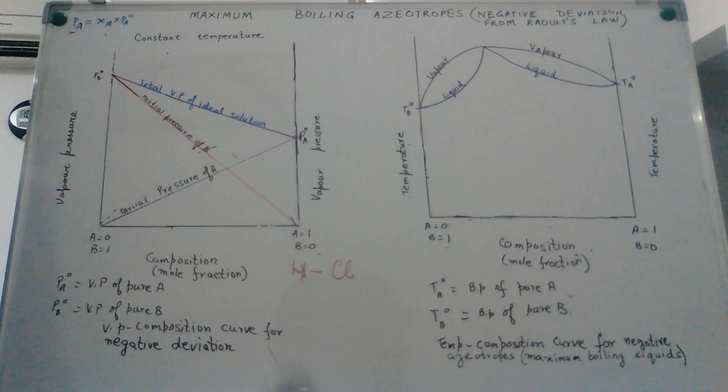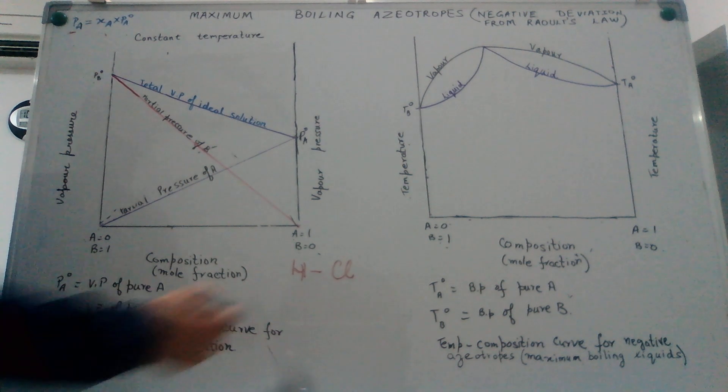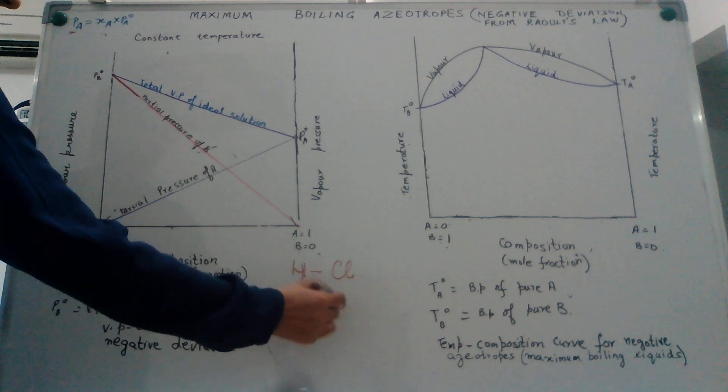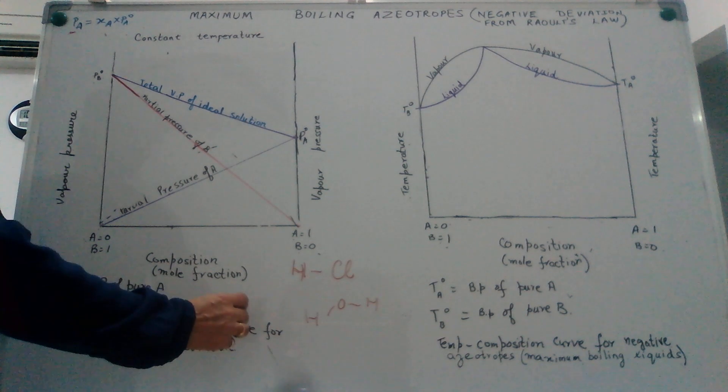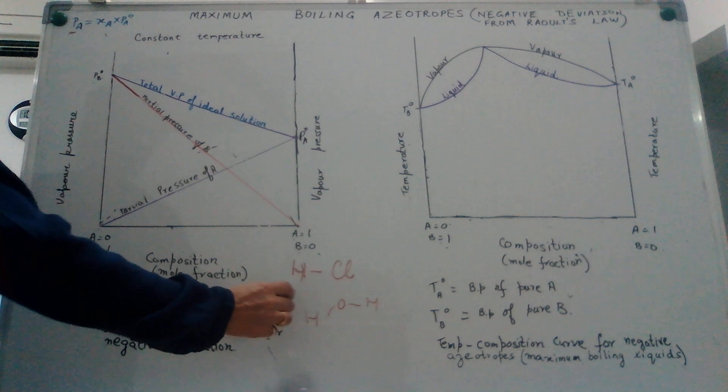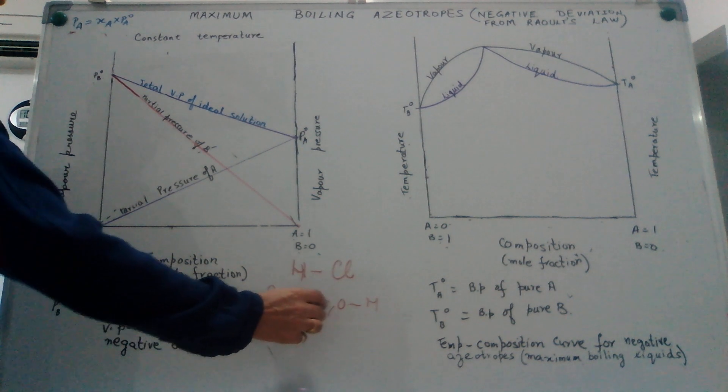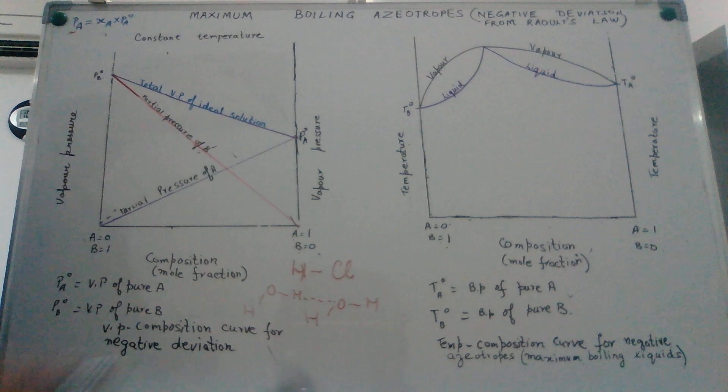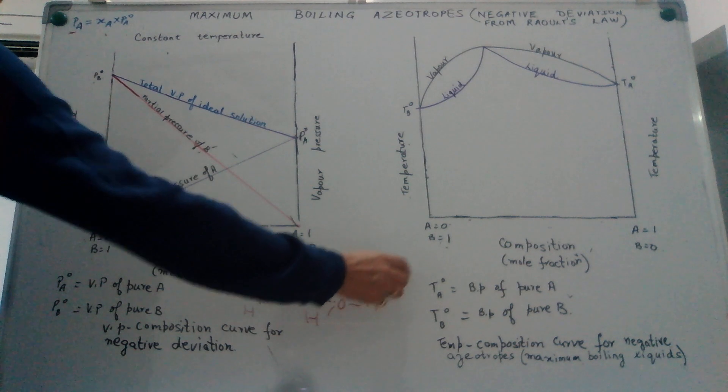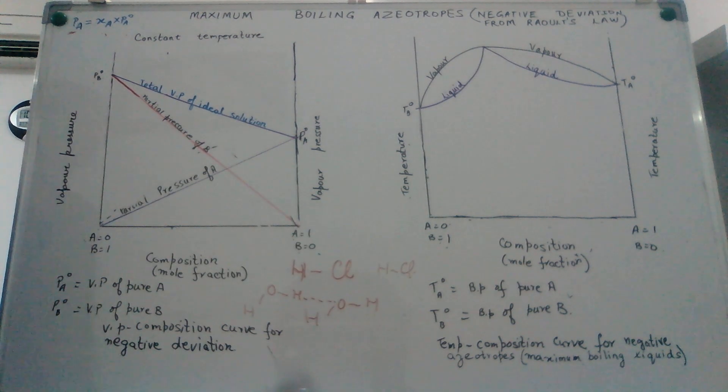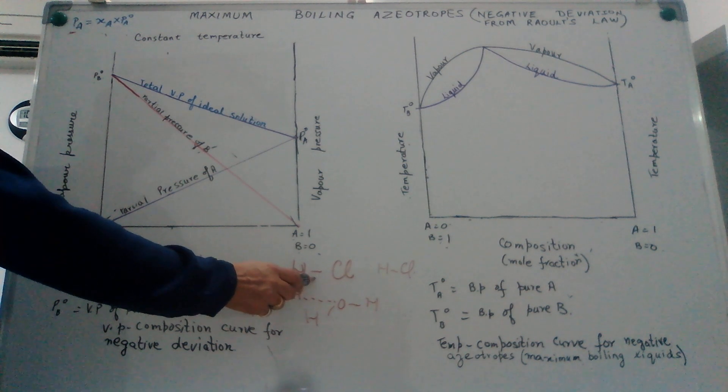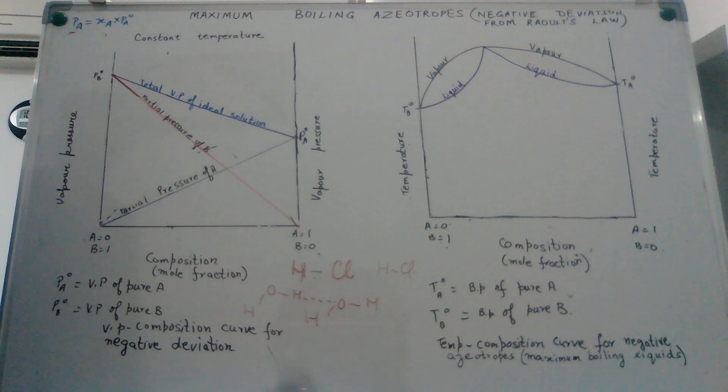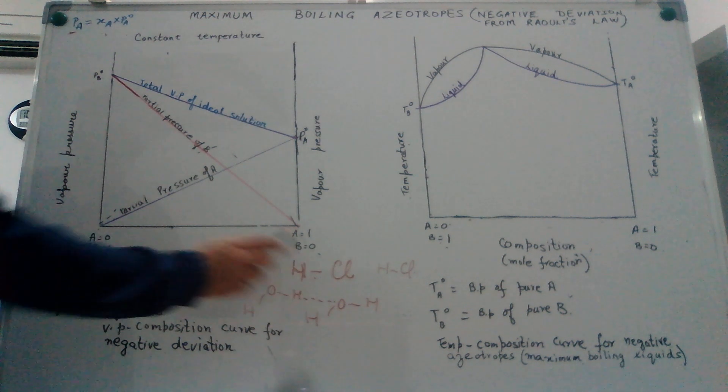Hydrogen chloride molecule shows covalent bonding. Same is there for water molecules. Water molecules have covalent bonding, but at the same time water molecules are also strongly attracted to each other by means of hydrogen bonding. HCl molecules on the other hand hold each other because of polar covalent nature.